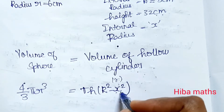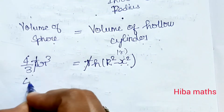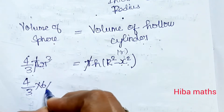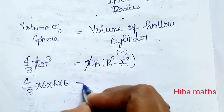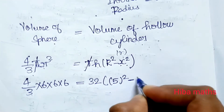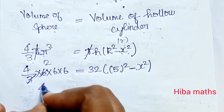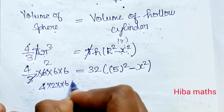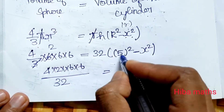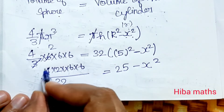Substituting values: capital R is 5, so R² is 25, and internal radius is x². The calculation gives: 4/3 × π × 6³ = π × 32 × (5² − x²), which simplifies to 4 × 2 × 6 × 6 / 1 = 32 × (25 − x²).